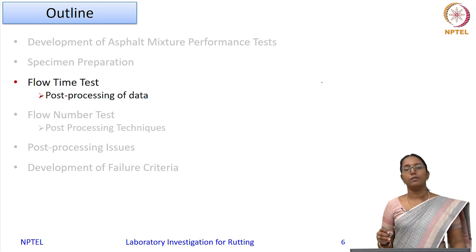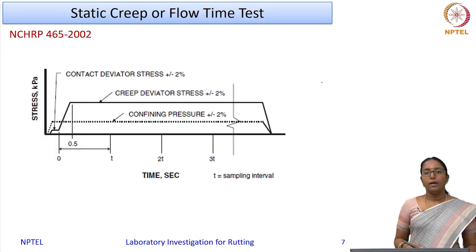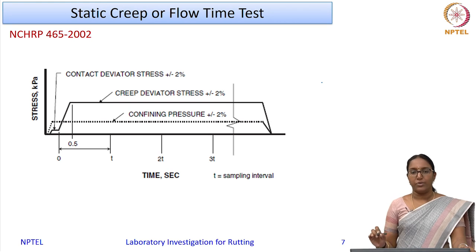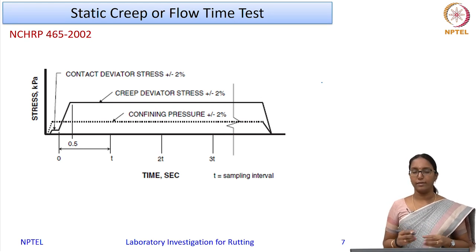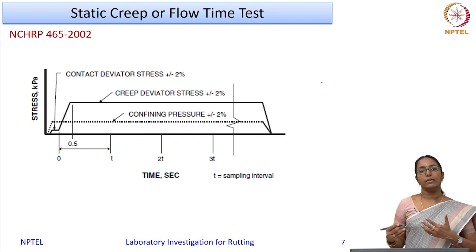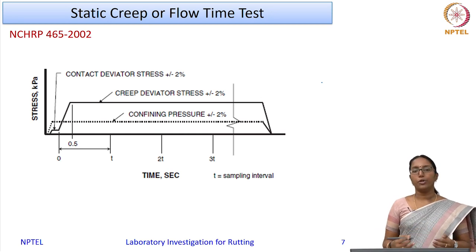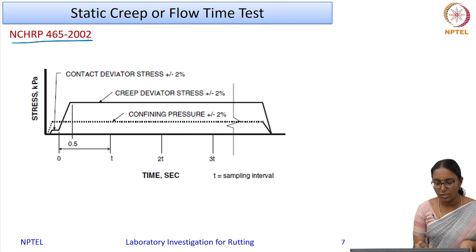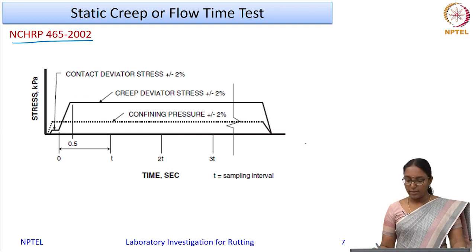Now let us discuss the flow time test—the test protocols and data processing. Flow time refers to a static creep test, where a static load is applied on the specimen for a sufficiently long time. This represents the loading of a stationary vehicle on your pavement surface. The protocol is taken from the NCHRP Report 465.